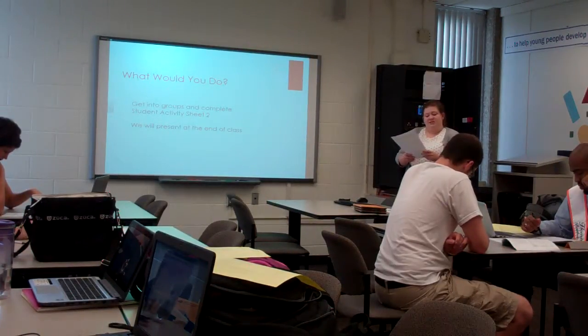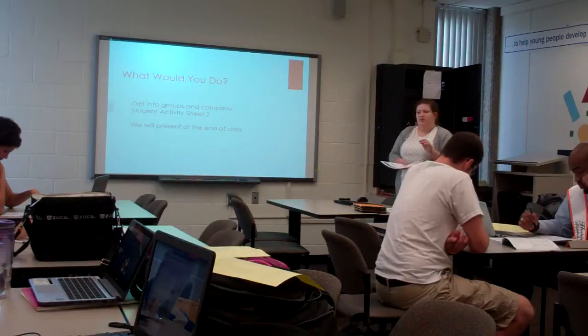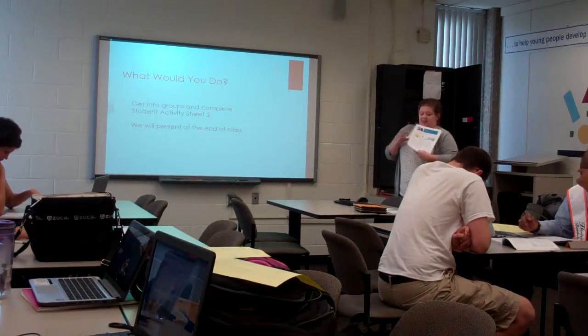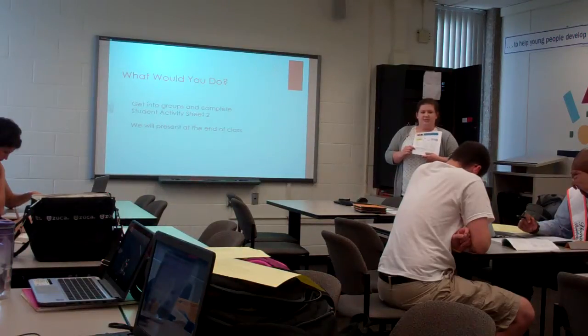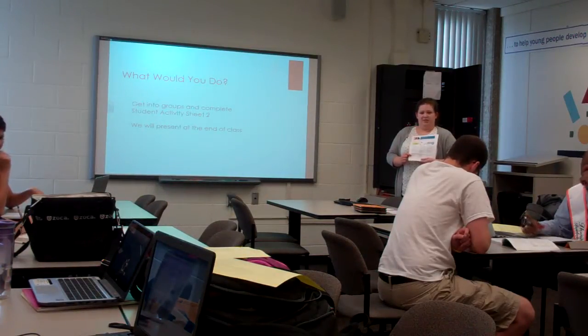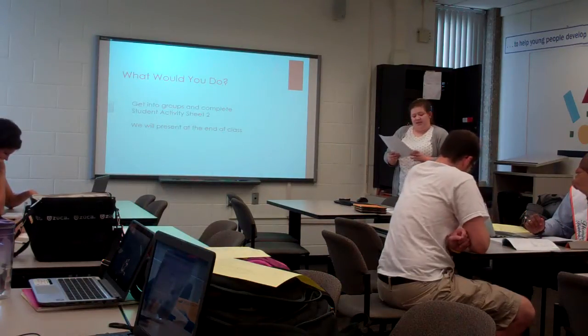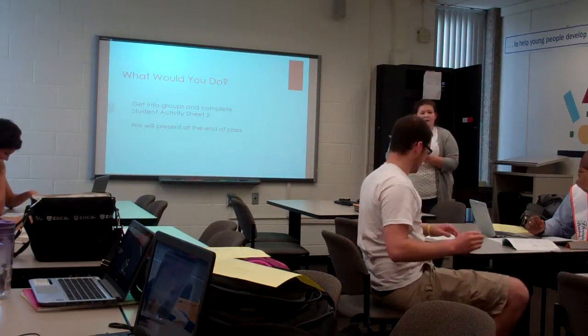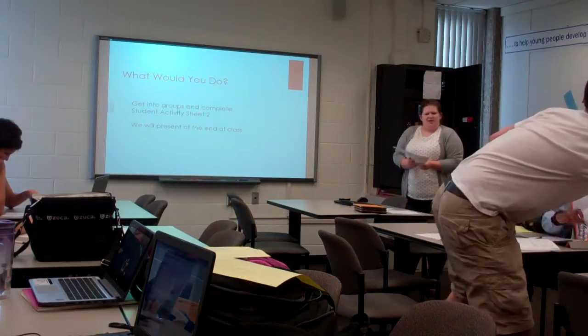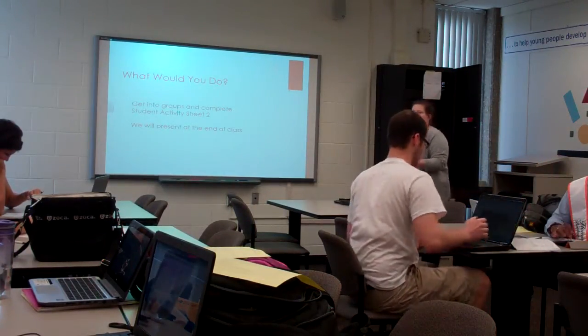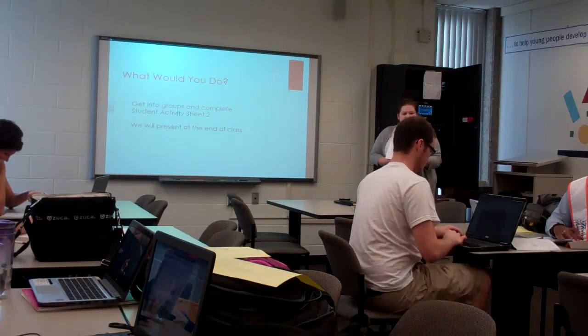So you're going to read your scenario, and the first question it's going to ask you is what financial information do you need? You're going to find that information by, at the very bottom of the column, going to these websites that they give you as resources. Scenario number one, you would use edmunds.com and kbb.com to find that information. And you guys can just sort of record this on any piece of paper. I don't need you to turn anything in, but we're going to present these as a class when you're finished.